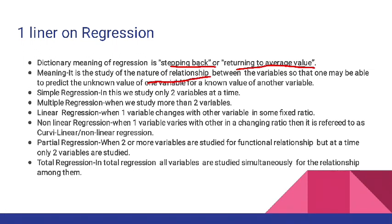Ab agar hum exactly define karein ki regression hota kya hai — yeh nature of relationship hai. Jaise correlation mein hota tha, do variables ke beech mein relation batata tha. Regression mein hum kya kar sakte hain — agar humein x aur y mein se y ki value malum hai to uske base par hum x ki value nikal sakte hain, calculate kar sakte hain. It is the study of the nature of relationship between the variables so that one may be able to predict the unknown value of one variable from a known value of another variable. Agar humein ek value pata ho, x aur y mein se koi ek value pata hai aur doosri value malum nahi, to jo value pata hai uske base par hum doosri value calculate kar sakte hain.